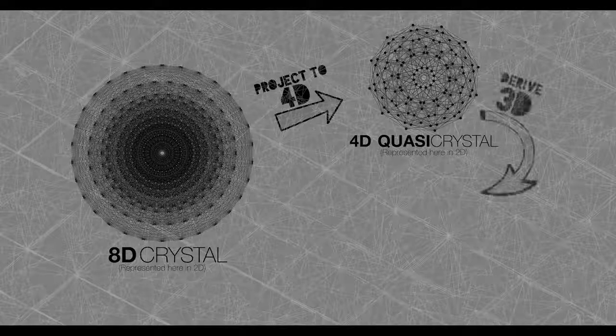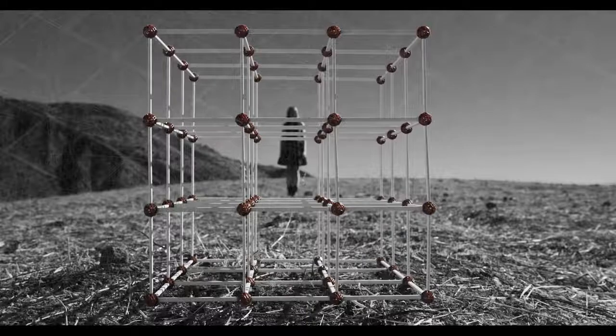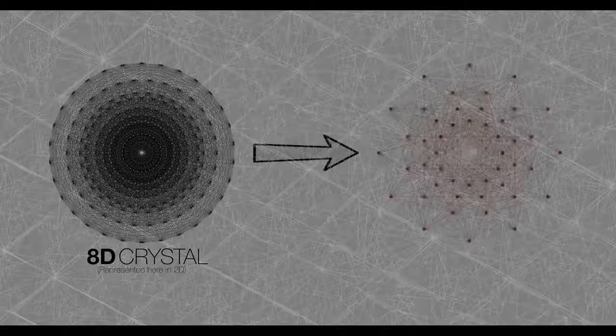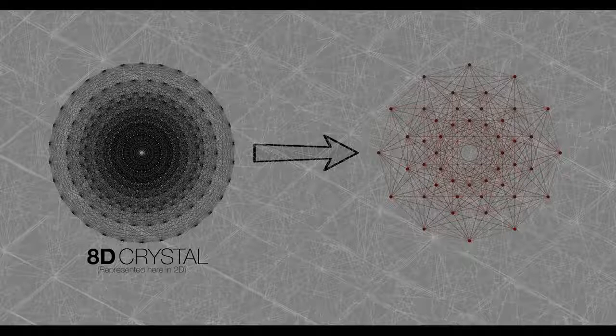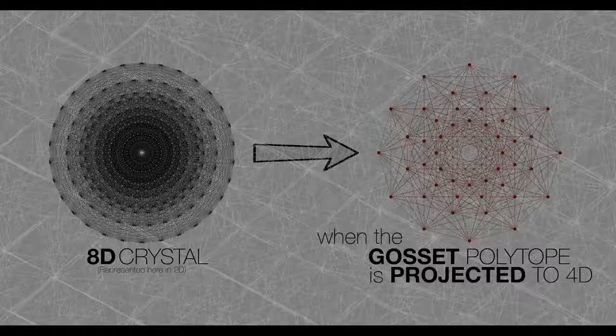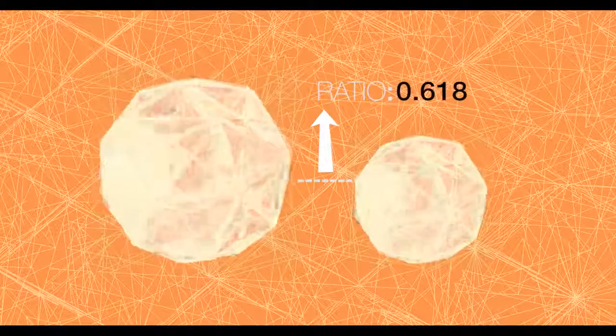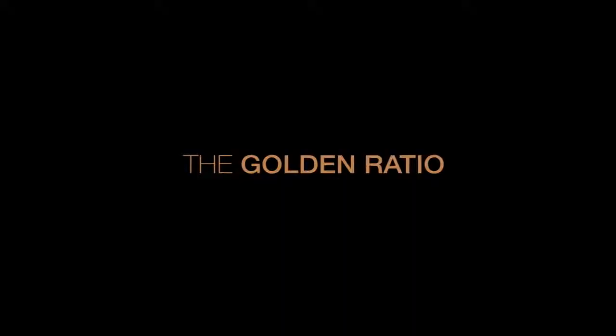To generate that 3D quasicrystal — the substructure at the pixelated fabric of reality — we project this 8D crystal to 4D, and then convert that to 3D. Just like the basic cell shape of the 3D cubic lattice is the cube, the cell shape of the E8 lattice is an 8D shape with 240 vertices called the Gossett polytope. When the Gossett polytope is projected to 4D, it becomes two identical shapes of different sizes. The ratio of their sizes is 0.618, also known as the golden ratio.